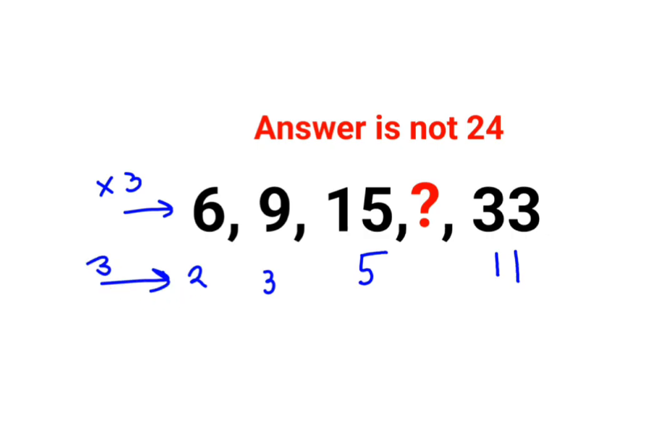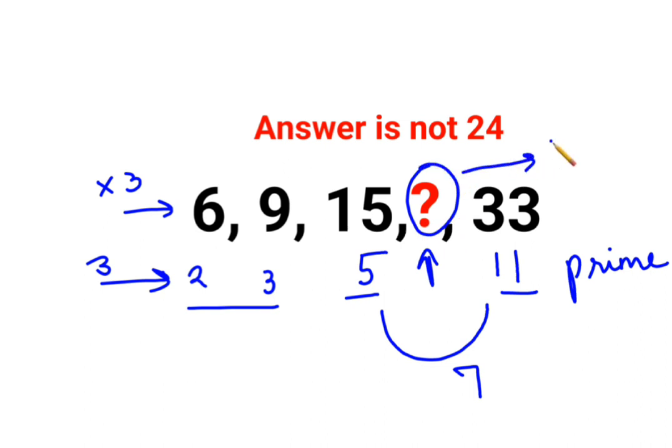So now in this case what we should do for this question mark. If you see clearly all of these numbers - 2, 3, 5, 11 - are prime, and the prime number which happens to come between 5 and 11 is 7. So this value of this question mark is supposed to be 3 multiplied by 7, that is equal to 21.